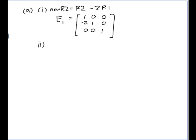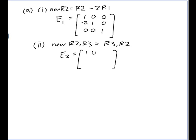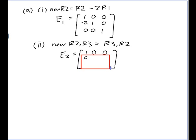Part 2: interchange row 2 and row 3. So the new row 2 and row 3 are the old row 3 and row 2 respectively. The elementary matrix E2 starts with the identity and interchanges row 2 and row 3. So rows 2 and 3 become 0 0 1 and 0 1 0 respectively.